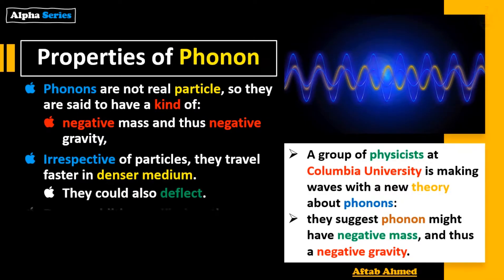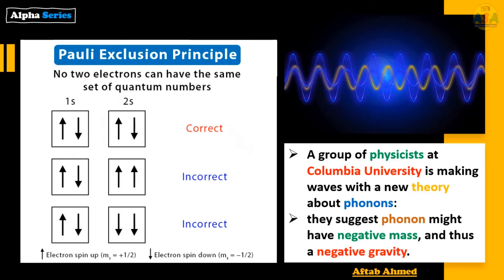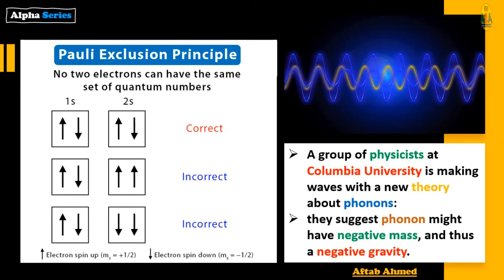Phonons could also be deflected, and due to additive oscillation, they do not satisfy the Pauli exclusion principle. The Pauli exclusion principle states that no two electrons can have the same set of quantum numbers — for example, in 1s and 2s shells. The first example is correct, but the second and third are incorrect because in the second, both electrons in 2s have spin up, and in the third, both have spin down, which violates the Pauli exclusion principle.